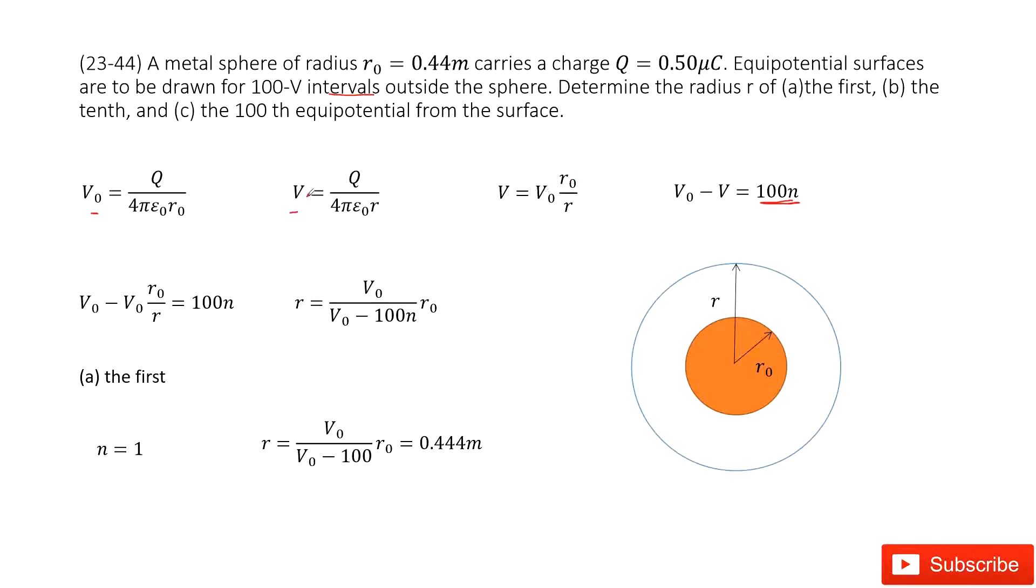And for simplify, we can write it as V naught times R0 divided by R to replace this term, right? So Q divided by 4 pi epsilon naught. So this is how we do that.